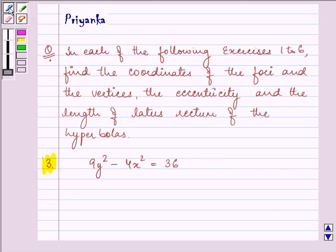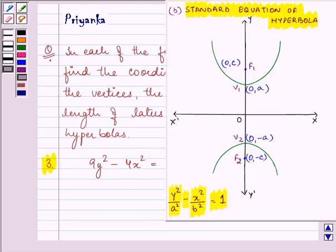Here the equation of hyperbola is given to us as 9y² - 4x² = 36. Now, before proceeding on, we should be well versed with the standard equation of the hyperbola and that is y²/a² - x²/b² = 1 when the foci lies on the y-axis.